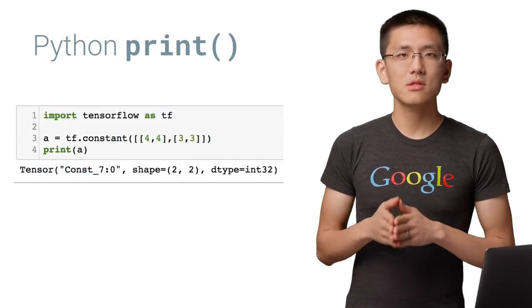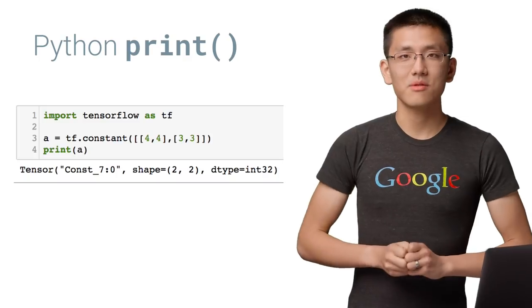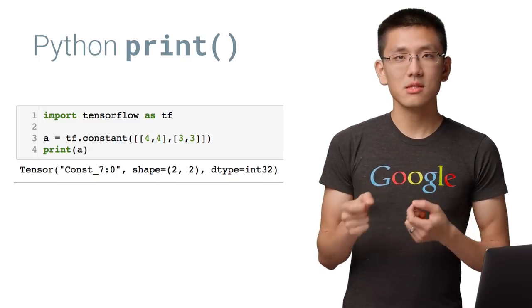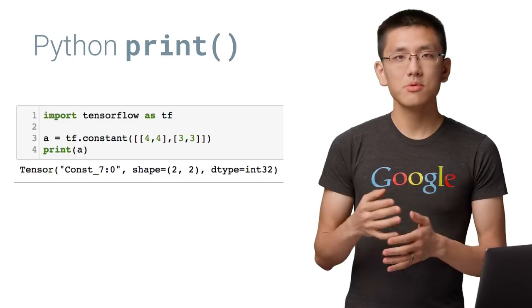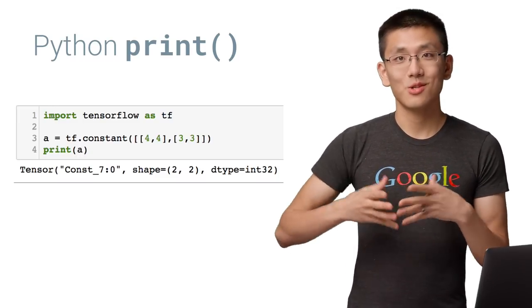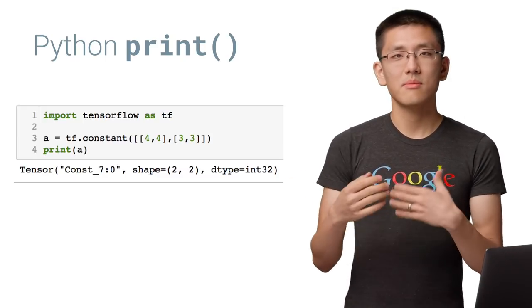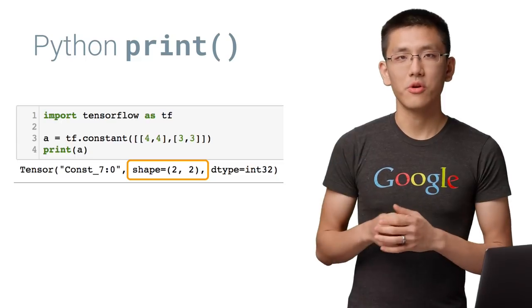When working with TensorFlow, it's important to remember that everything is ultimately a graph computation. This means that if you just use Python to print a TensorFlow operation, it will simply show a description of what that operation is, since no values have been passed through it yet. It will also often show the dimensions that are expected to be in that node, if they're known.